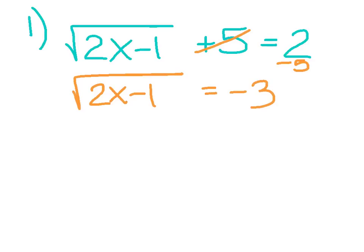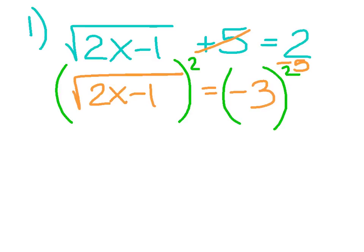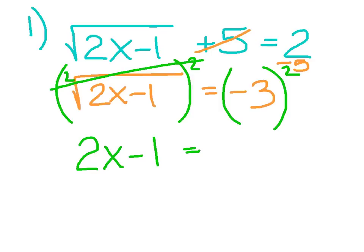Step 2: we just called this a square root, so to eliminate the root, I need to raise both sides to the second power. Make sure we wrap both sides into parentheses and square each side. The whole point of squaring a square root is that they cancel each other out. So on this side, I should just be left with 2x minus 1. On this side, negative 3 squared is 9 — and that's a positive 9. If you're going to use your calculator, make sure we have that wrapped in parentheses.